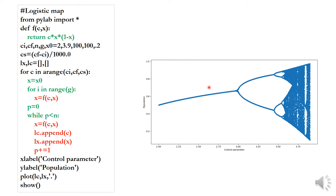We initialize an empty list to store the attractive points corresponding to each control parameter value. This list will accumulate the attractor results as we iterate through each value of c.